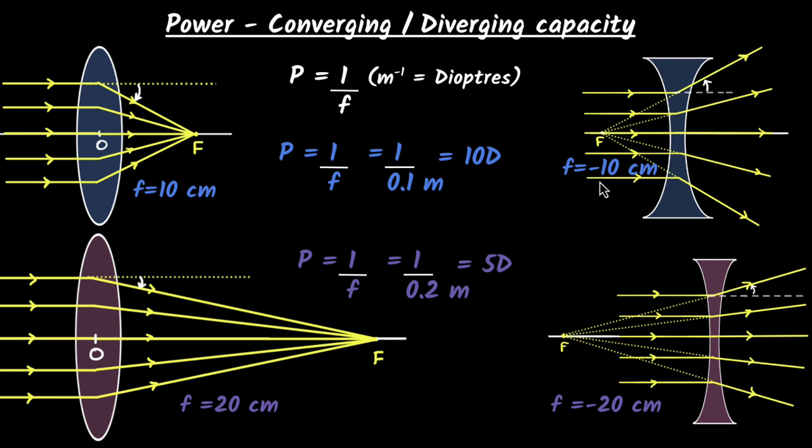So it'll be minus 10 diopters. Similarly, if the focal length is minus 20 for a diverging lens, you'll get minus five diopters. And so you can now see that for converging lenses, we'll get positive power. For diverging lenses, we get negative power. And that's basically how we differentiate between converging and diverging lenses.